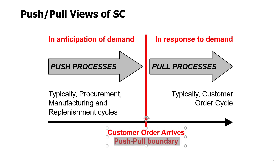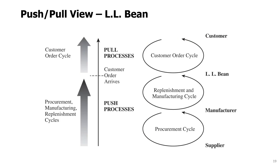We say there is a push-pull boundary which is defined by when the customer order arrives. For example, consider LL Bean — a company that makes clothing and outdoor recreational equipment and sells over the internet or e-commerce. LL Bean will procure parts, manufacture, and replenish inventories at distribution centers before demand occurs, then wait for customer demand. When customers order on a website, they deliver. So only the customer order cycle is done as a pull process.